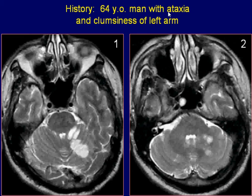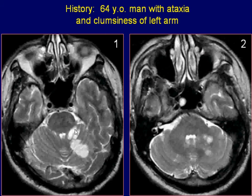A 64-year-old man with ataxia and clumsiness of his left arm. Axial T2-weighted images with cerebellum demonstrate abnormal high-signal areas at the medial aspect of the left cerebellum, involving the left vermis and left superior as well as middle cerebral peduncles.